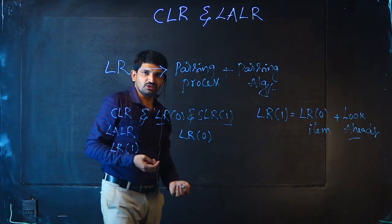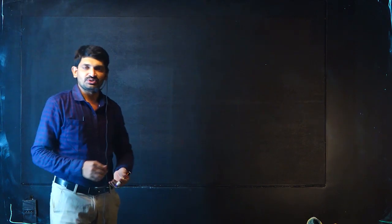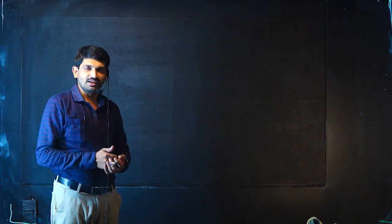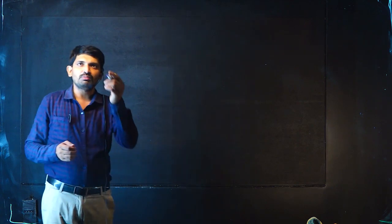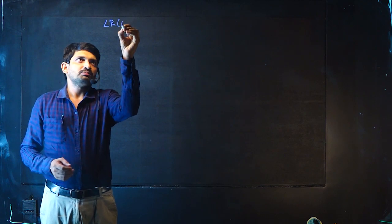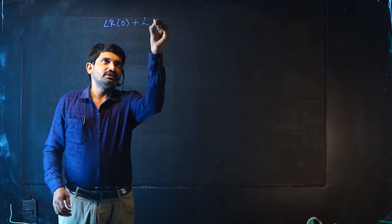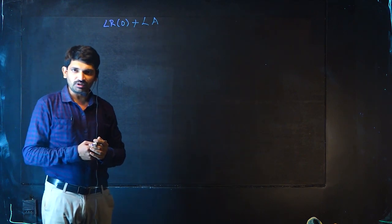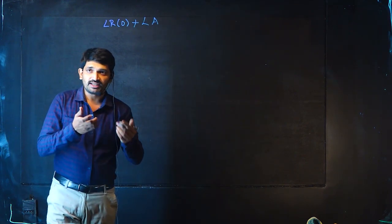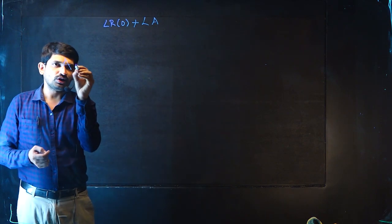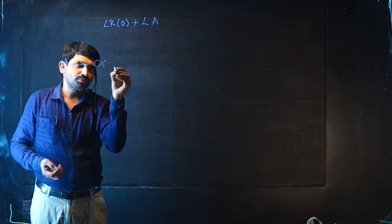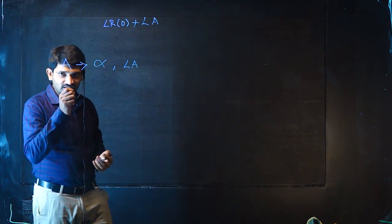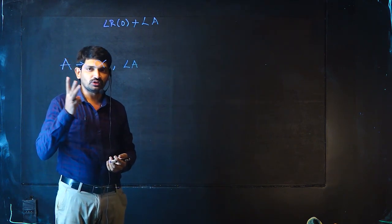So what is an LR 1 item? The LR 1 item is the combination of an LR 0 item plus lookaheads. For every production in the grammar, we have to attach the lookaheads — for example, A → α with some lookahead symbol attached. To find these lookaheads, we follow three rules.